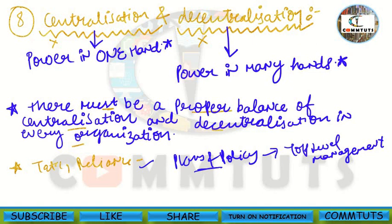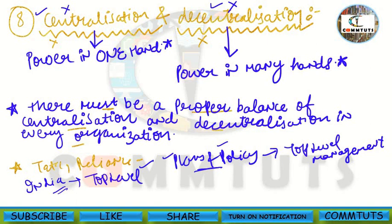For example, consider a country. A country cannot run on complete centralization or complete decentralization. The main power — plans, policy formulation — rests with top-level authority like the President and Prime Minister. Then power is divided to cabinet ministers: the education minister handles education, the transport minister handles transportation. That division represents decentralization.